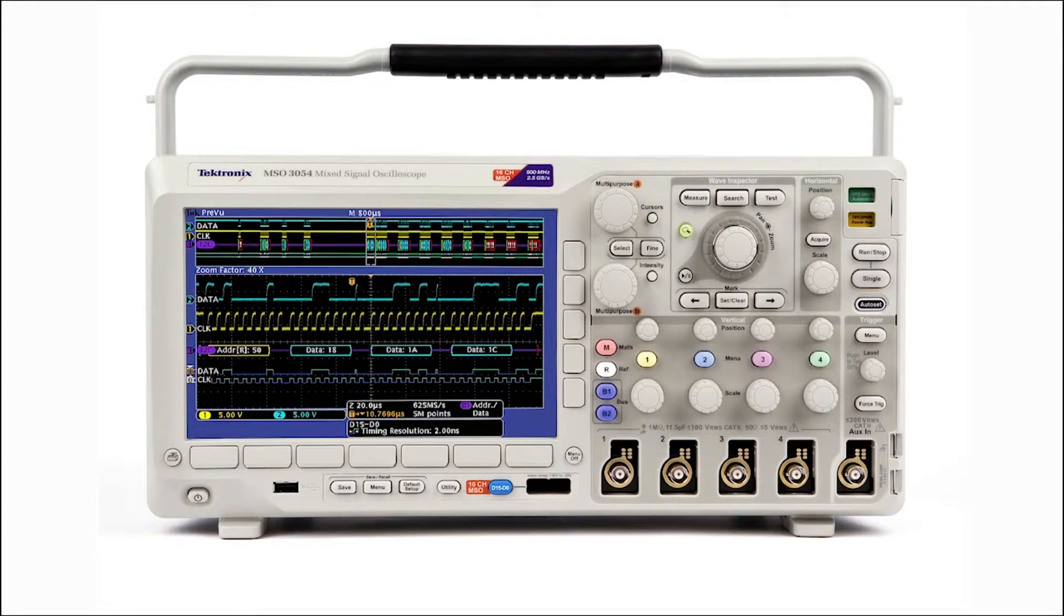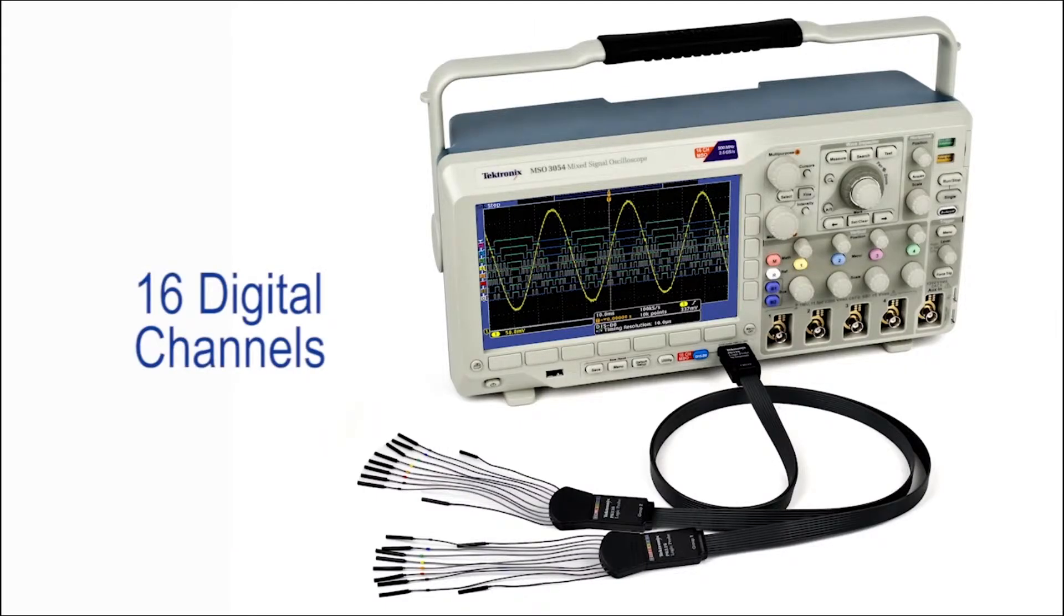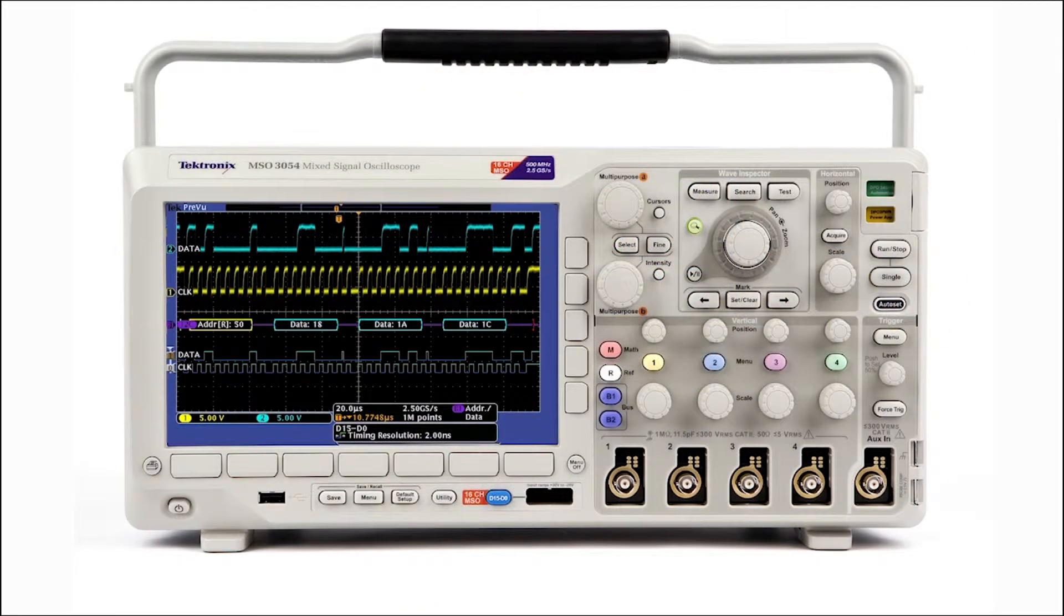The MSO-DPO3000 is available with up to four analog input channels and 16 digital channels. Any of these 20 channels can be used as an I2C clock or data signal, and you can monitor two buses at the same time.